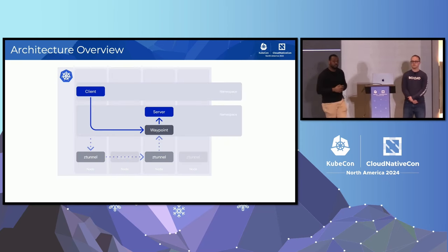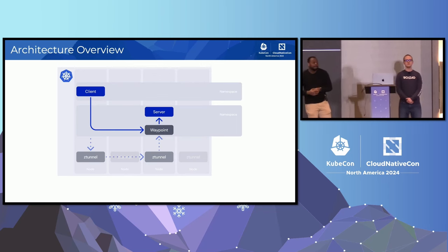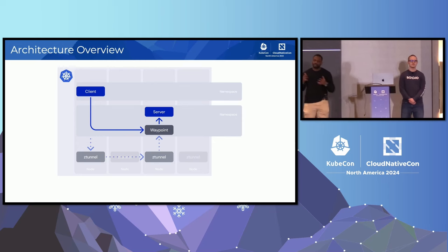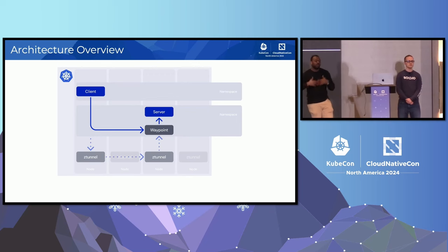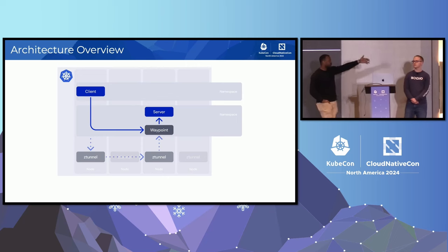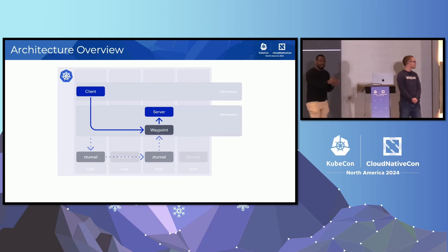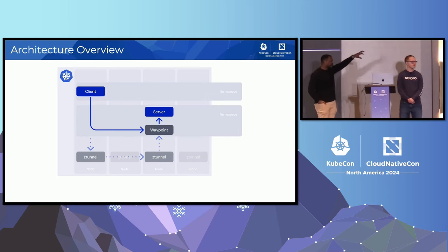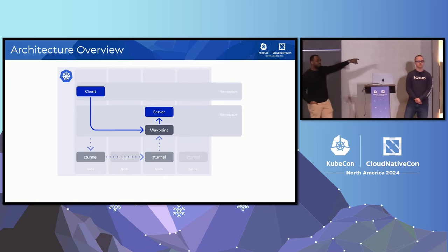We also have waypoint proxies for when you need layer 7 capabilities — maybe JWT integration with Auth0, or routing based on headers. For those cases in the two-proxy Ambient architecture, you deploy a waypoint proxy. Waypoint proxies serve as cluster-internal gateways. When you call a service, the waypoint sits in front of that service and handles layer 7 policy or traffic manipulation. Z-Tunnels live on the node while the waypoint proxy lives in the namespace, and those waypoint proxies can be auto-scaled.